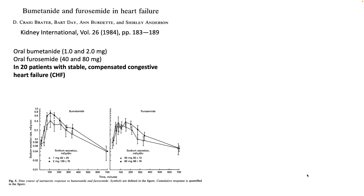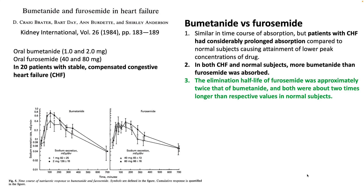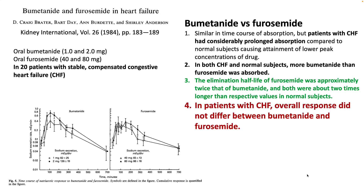There are very few articles which do a good job comparing these two drugs. This one from 1984 compared oral bumetanide versus oral furosemide in 20 stable congestive heart failure patients. As expected, patients with heart failure had considerably prolonged absorption. Bumetanide was better absorbed and the elimination half-life was longer in heart failure, however the amount of natriuresis did not differ between the two groups.